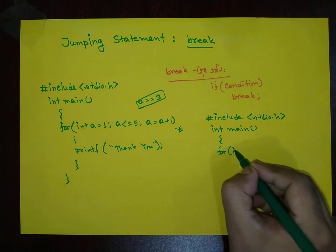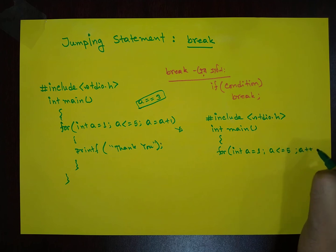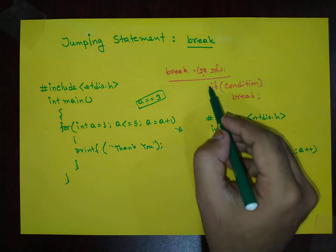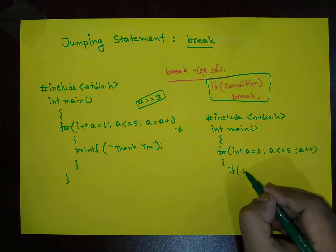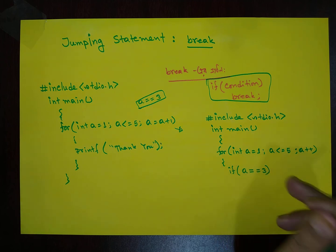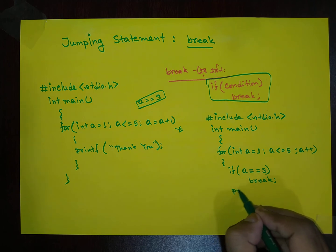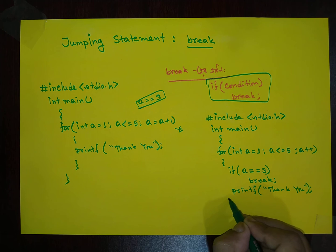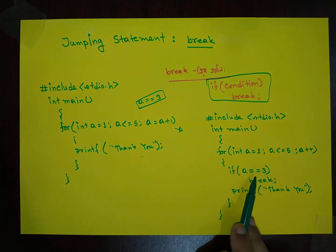I will write in main: for integer a equal to 1, a less than or equal to 5, a++. Now I will add a simple if condition: if a equals 3, we break. So the loop runs 1, 2, 3 times and then breaks. Here is the printf, and this is the loop with the break statement — this is a jumping statement.